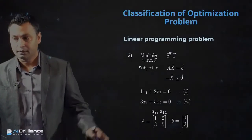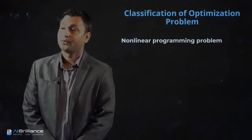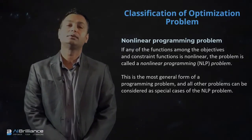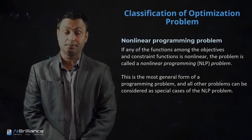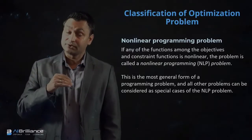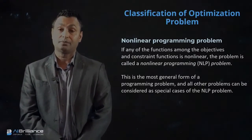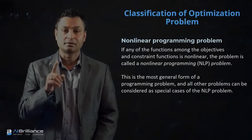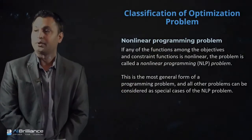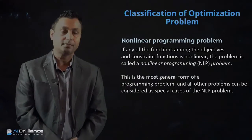Similarly, we have what is known as non-linear programming problems. An important distinction to remember: it is not necessarily only the objective function that matters. If even the constraints of the optimization problem are non-linear, then the overall problem becomes a non-linear optimization problem. So if only one of the functions — either the objective function or a constraint — is non-linear, then you basically have a non-linear programming problem. This is the most general form, and all other problems can be considered as special cases of non-linear programming problems.